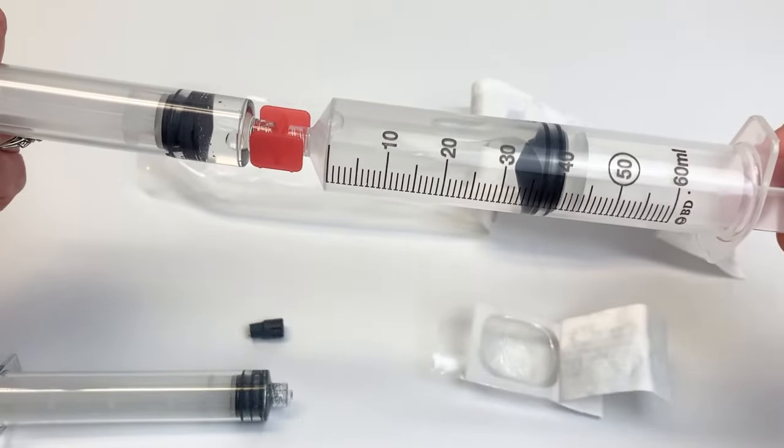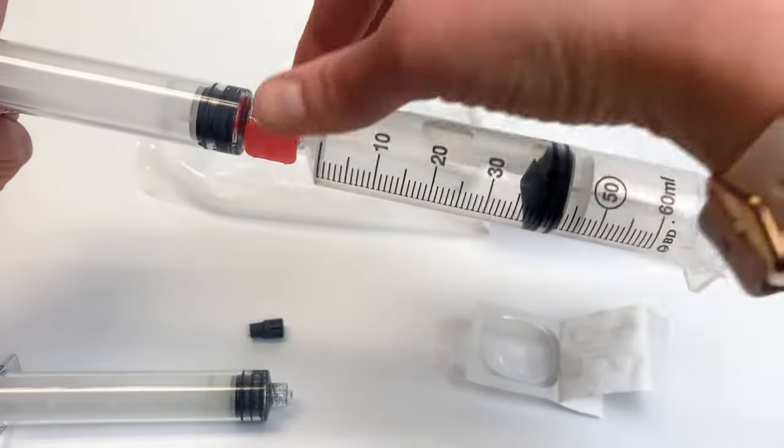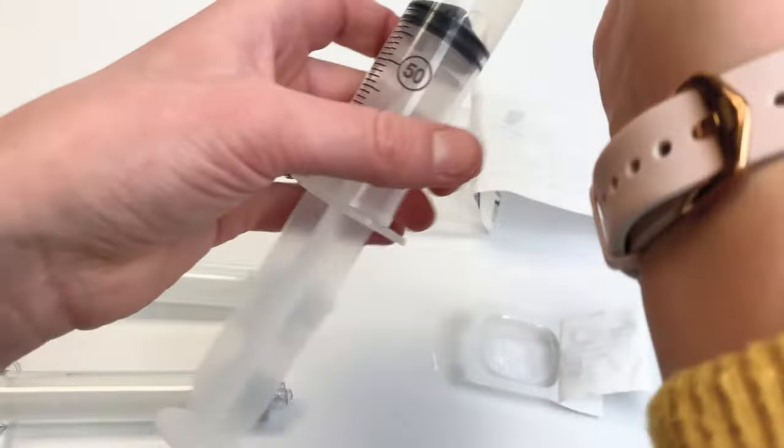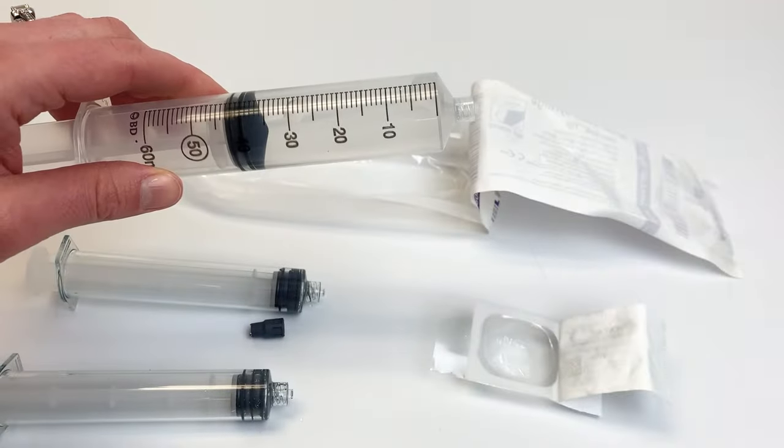Once all medication is fully transferred, remove syringes from the transfer device. The BD syringe is now ready for your assembled tubing set.